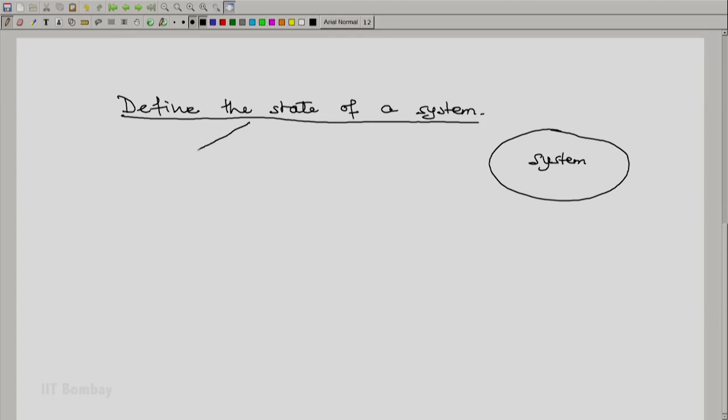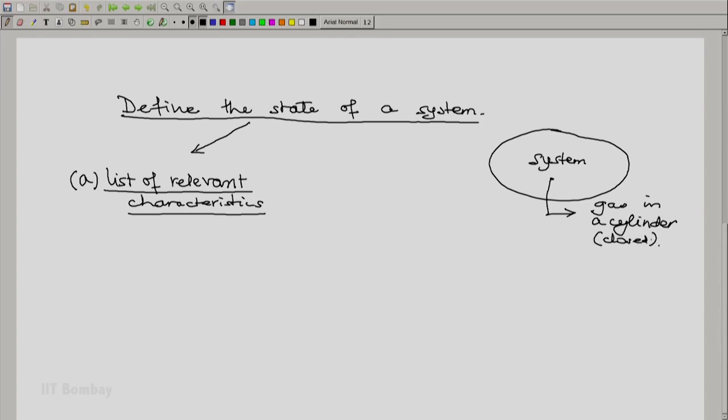To define the state of a system, we have to first make a list of relevant characteristics of a system. For example, if we consider the system to be gas in a cylinder, closed cylinder, so a closed system.